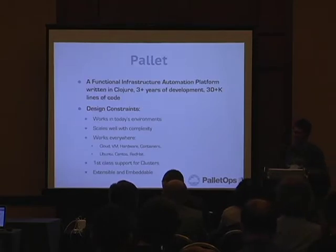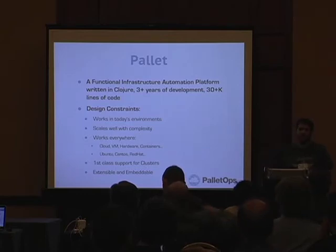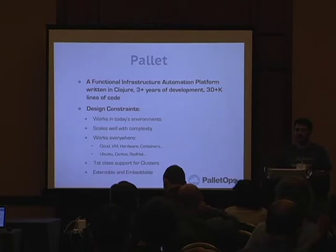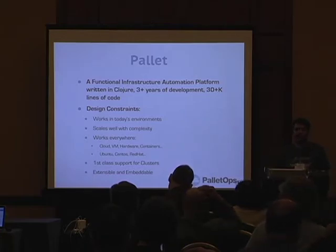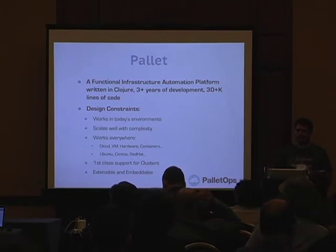The reason I'm talking about this is because we started, over three years ago, Pallet — an infrastructure automation platform built on Clojure, which is a Lisp that runs on the JVM. The core is now over 30,000 lines of code. We wanted to solve this complexity problem because we wanted to automate infrastructure and the current tools didn't quite cut it.